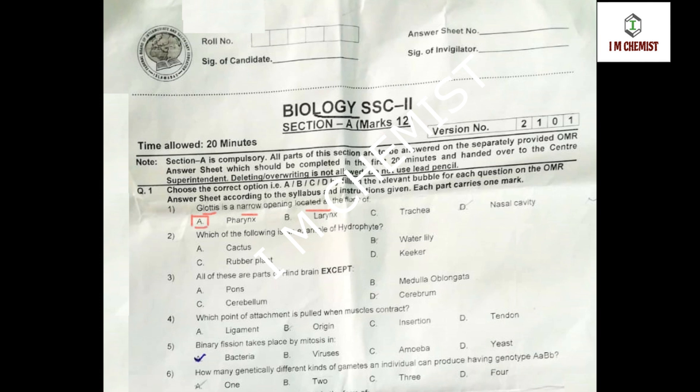MCQ number 2 is: which of the following is an example of hydrophytes? Various options are given — cactus, water lily, rubber plant, and kicker. The right option is option number B, that is water lily. Water lily is an example of hydrophytes.